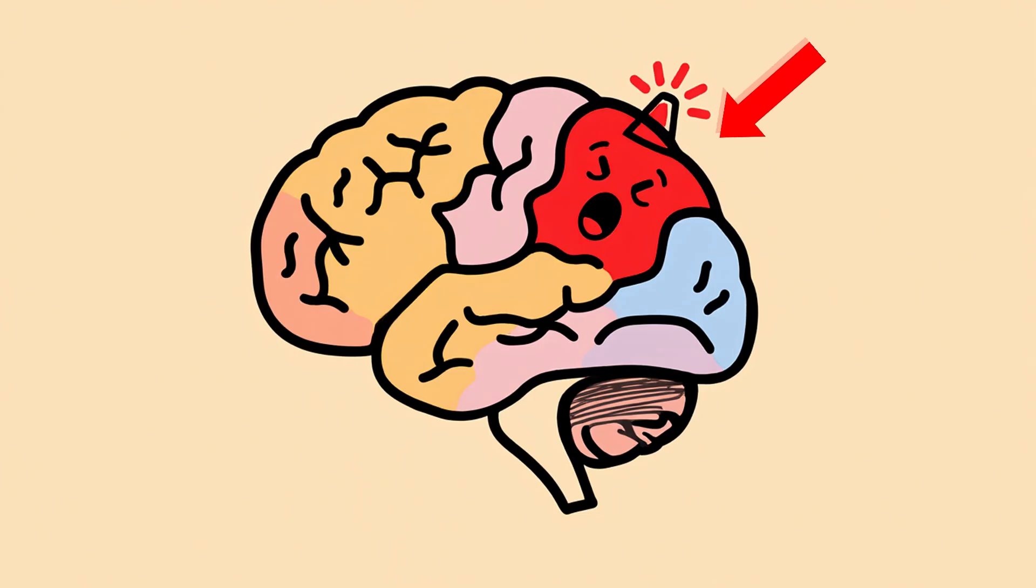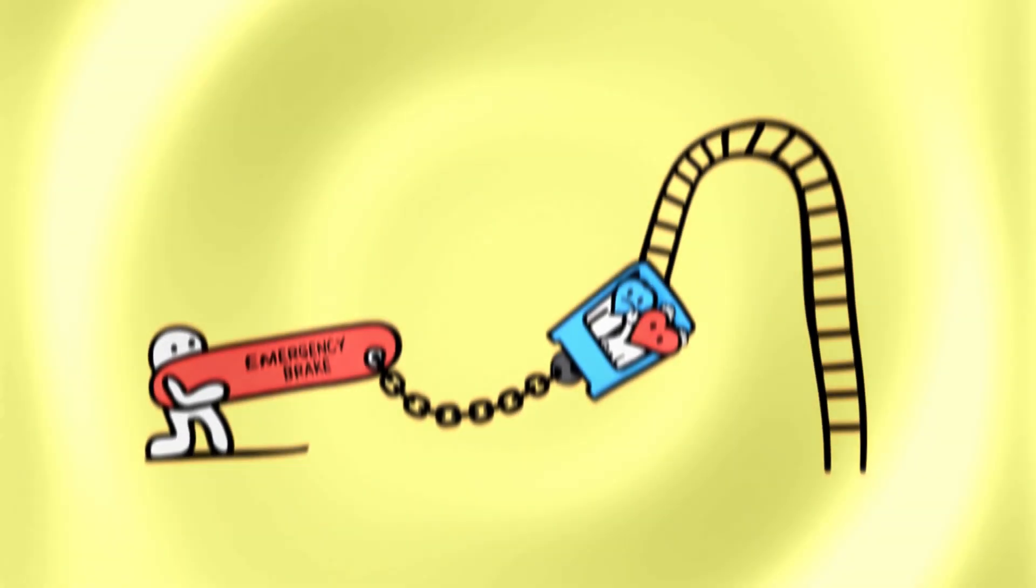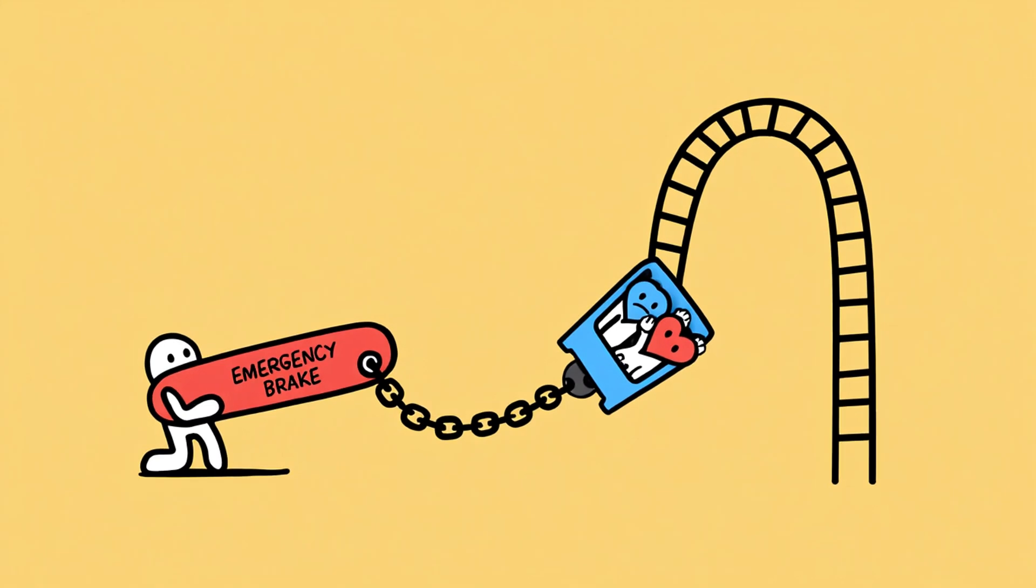Scientists say it's your amygdala. That tiny part of your brain that handles emotions and alarms going full red alert. It yells, shut it down. Like yanking the emergency brake on an emotional roller coaster right in the middle of the loop.